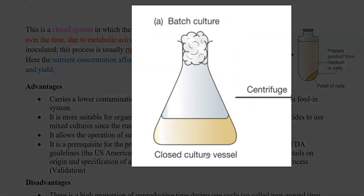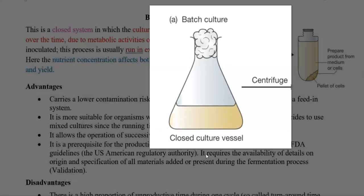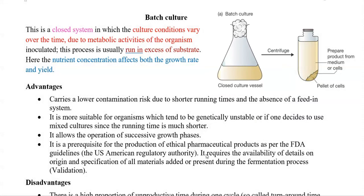That is the one shown on the right-hand side of the diagram. It is a closed system in which culture conditions vary over the time period, mainly due to the metabolic activities of the organism. After inoculation, this process will usually run in the excess of substrate. Nutrient concentration affects both the growth rate as well as the yield of the bacteria.